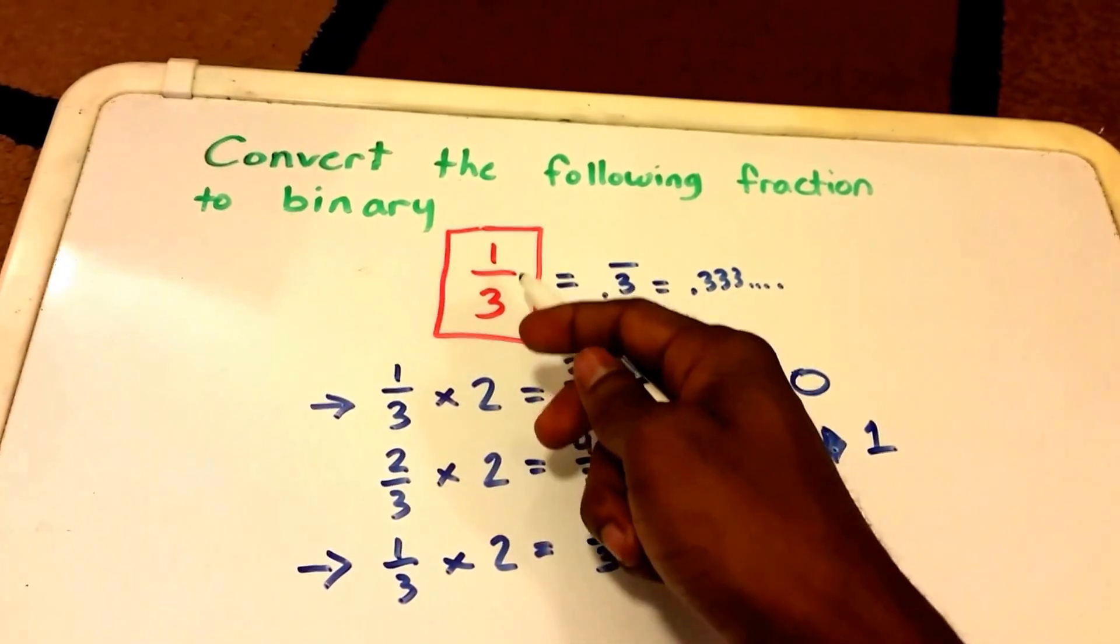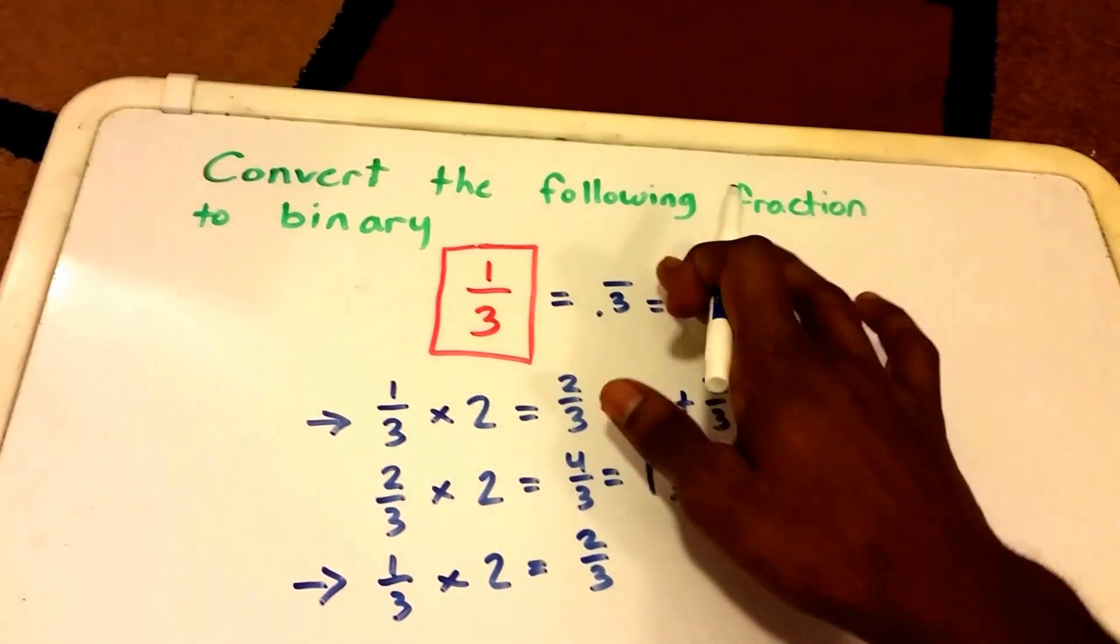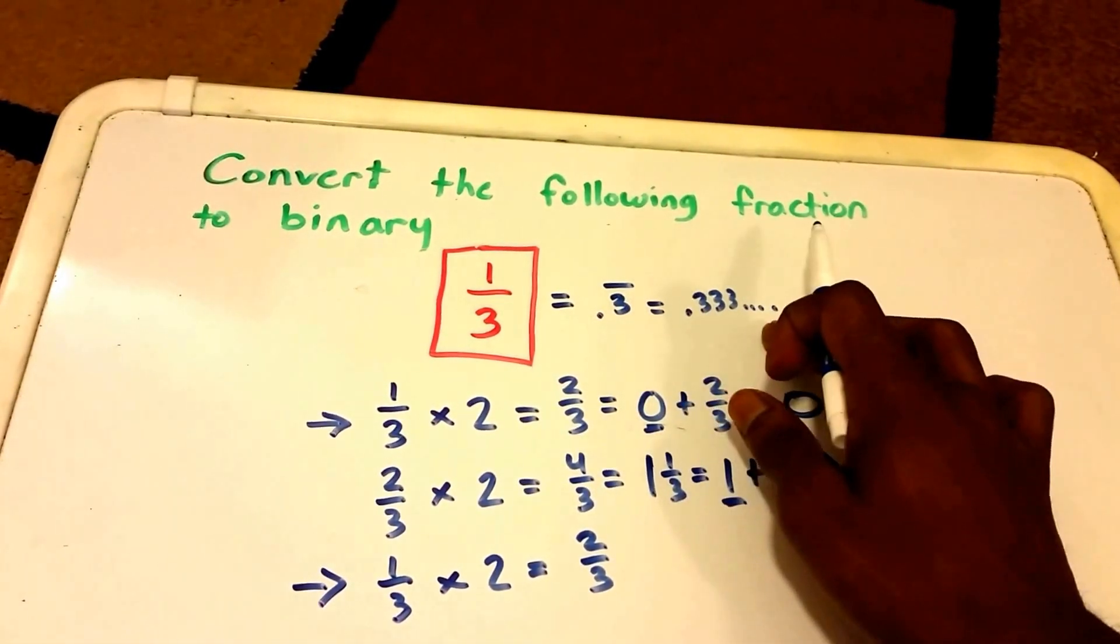And 1/3 is equal to not only 0.3 repeating, or 0.333... all the way to infinity, but it's also equal to 0.01 in base 2 repeating.